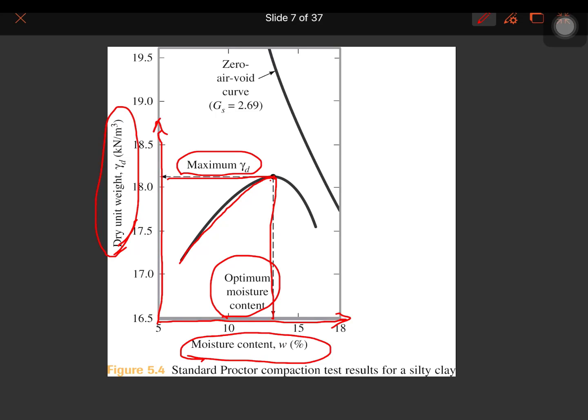Additional moisture content will decrease the maximum dry unit weight. Now, if we consider a saturated soil, we can compute for the zero air void unit weight. Here is the graph for that consideration.